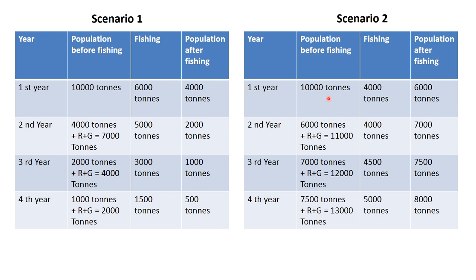On the other hand, if we harvest within the limit — not beyond the natural growth rate — the stock will actually increase and we also increase our harvest. For example, starting at 10,000 tonnes and harvesting 4,000 tonnes leaves 6,000 tonnes. In the second year, with biological growth and recruitment, it reaches 11,000 tonnes; we harvest 4,000 tonnes and 7,000 tonnes remains. So if we do not harvest beyond the biological growth rate, the stock increases. If we harvest beyond the biological growth rate, the stock declines.